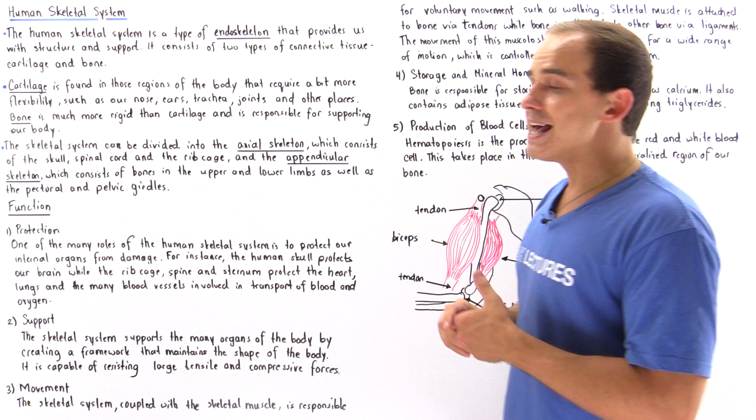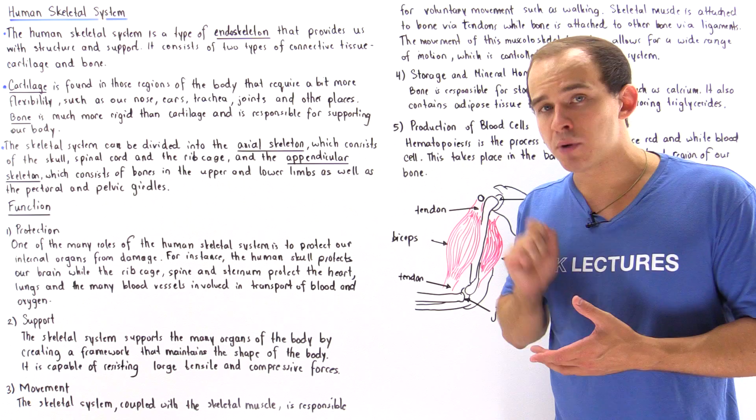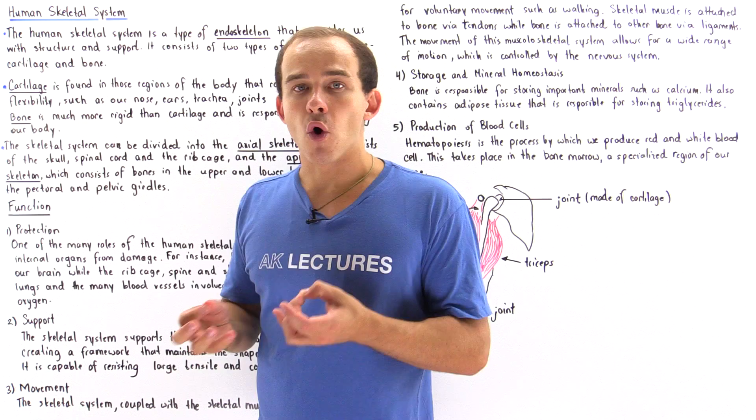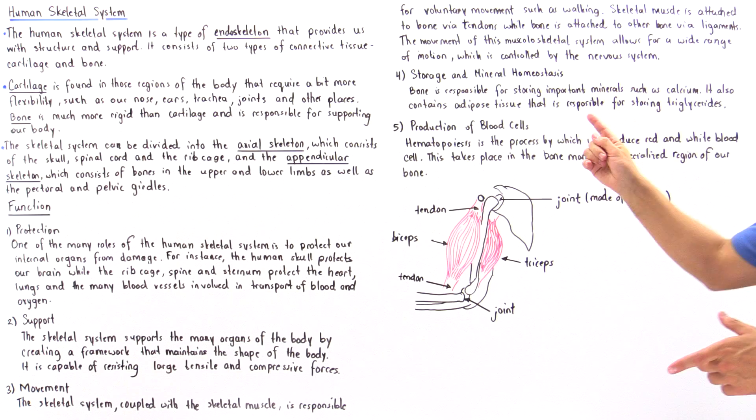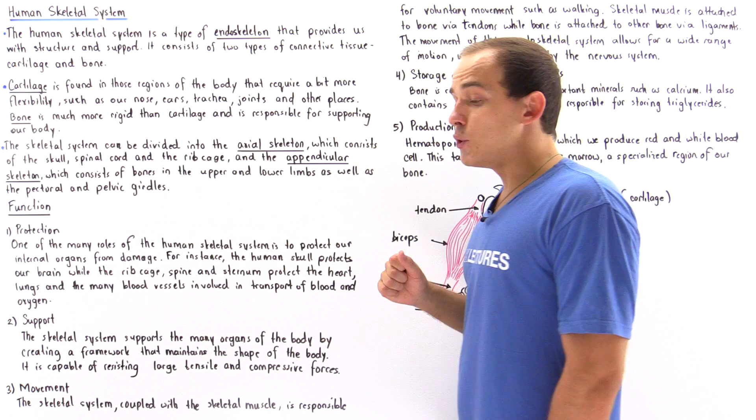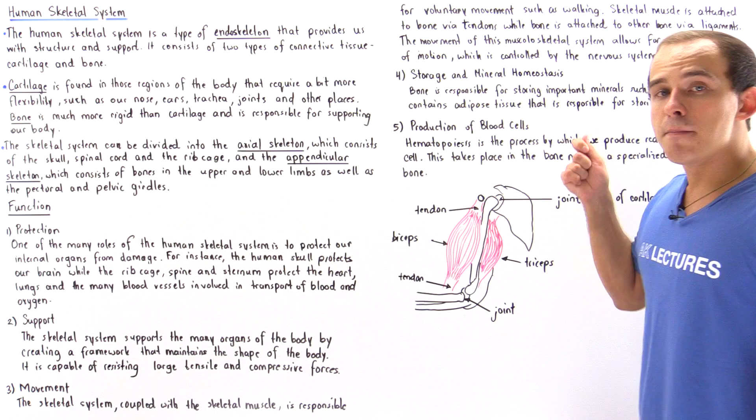Now the fourth type of function is in storage as well as mineral homeostasis. Basically, our bone contains a special type of tissue known as adipose tissue, and adipose tissue consists of cells known as adipocytes. These adipocytes, the adipose tissue, basically store our fatty acids in the form of triglycerides. These triglycerides can be used to break down and form ATP molecules in the mitochondria of the body. The bone is also responsible for storing important types of minerals that are used by the body, by the cells. One example of the minerals stored is calcium.